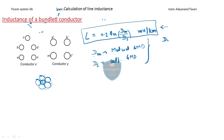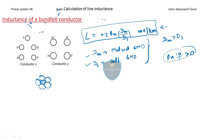The key formula for bundled conductor inductance is mutual GMD divided by self GMD. In the next lecture, we will cover how to calculate mutual GMD and self GMD, which is the most critical part of the inductance chapter — all other parts are formula-based, but this part needs to be understood clearly.